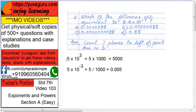Suppose if I say 5 into 10 raise to 3, it means 5 into 1000, equals to 5000, right?